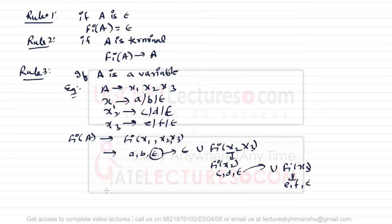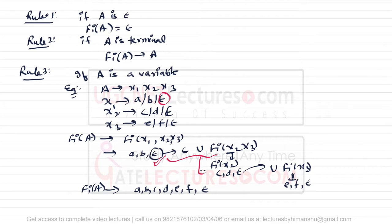Therefore, FIRST(A) = {a, b, c, d, e, f, epsilon}. However, if X1 does not contain epsilon, then we don't need to check the subsequent symbols — we only continue to the next step if epsilon is present.